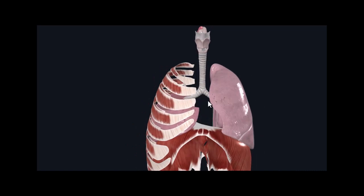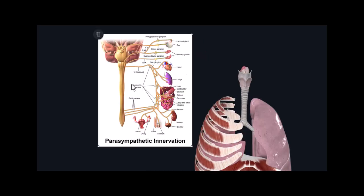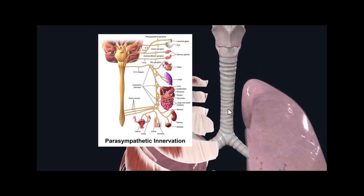The lungs are controlled via the autonomic nervous system. You don't really think 'breathe in, breathe out' — it just happens naturally. The lungs are innervated by the autonomic nervous system, and they have a combination of parasympathetic innervation and sympathetic innervation.